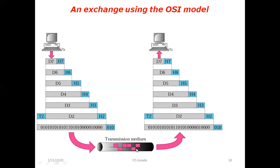In the transmit medium you can see the line-coded output, which may be wired or wireless. On the right-hand side the same bits appear, and then you go to the D2 layer. The D2 layer takes something from the physical layer and has two things to add: a header H2 and a trailer T2.